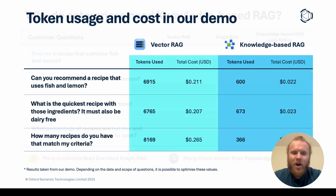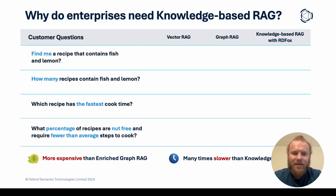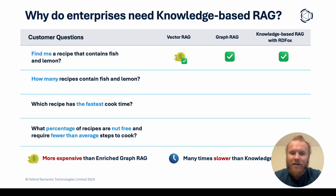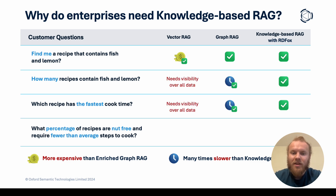So, why do enterprises need Knowledge-based RAG? It all comes down to speed, cost, and above all, the ability to accurately answer complex questions. With simple questions, VectorRAG, GraphRAG, and Knowledge-based RAG will all provide a suitable answer, although VectorRAG can be far more expensive. For questions that require total oversight of the data, VectorRAG fails, leaving only GraphRAG and Knowledge-based RAG — although even here, GraphRAG alone can be slow.